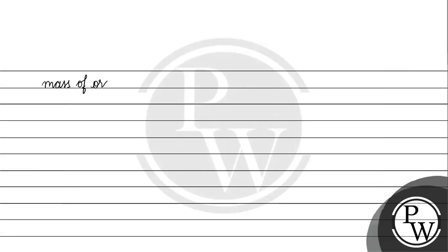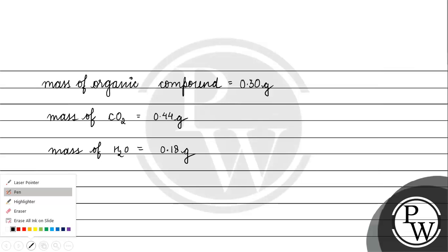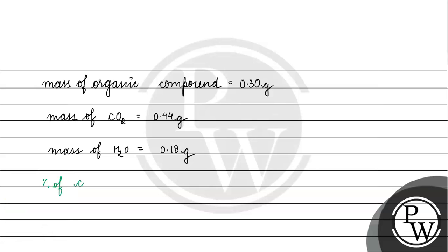Now let's solve this question. The mass of the organic compound is 0.30 grams. The mass of carbon dioxide is 0.44 gram and the mass of water is 0.18 gram. Percentage of carbon equals (12/44) multiplied by 0.44, divided by 0.30, multiplied by 100, which equals 40%.